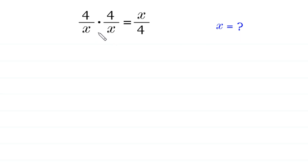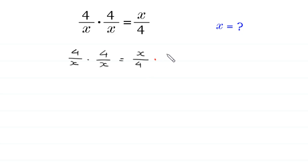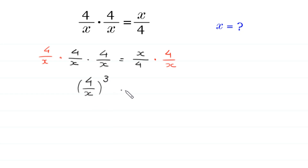First of all, we multiply both sides of this equation by 4 over x. At the left side, we multiply by 4 over x. Now, 4 over x times 4 over x times 4 over x becomes 4 over x cubed. This x will be cancelled with this x, and this 4 will be cancelled with this 4, leaving 1 at the right side.